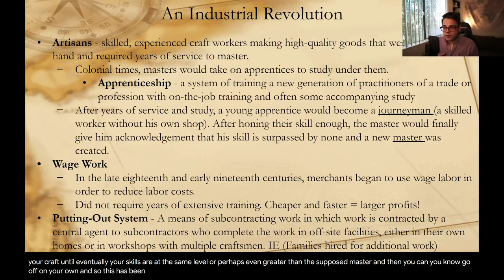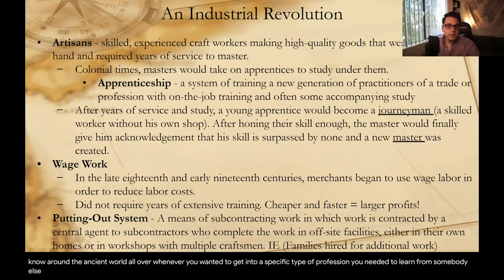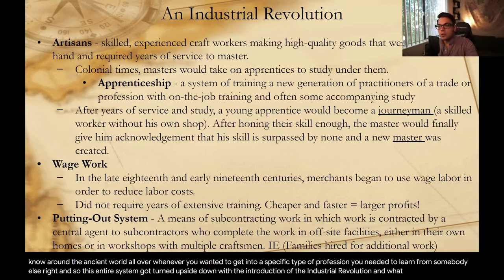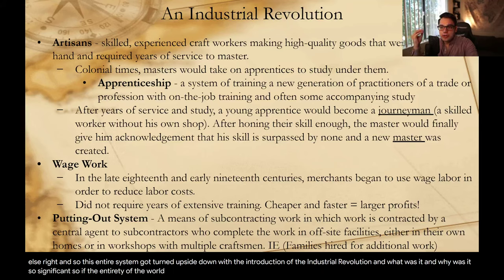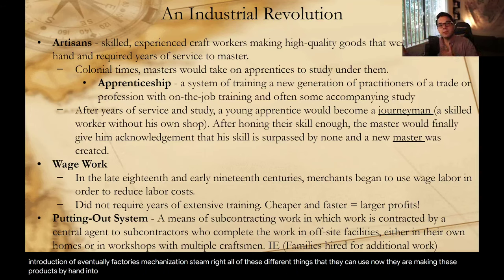This has essentially been the way of the world — not just throughout Britain and Europe, but around the ancient world. Whenever you wanted to get into a specific profession, you needed to learn from somebody else. This entire system got turned upside down with the introduction of the Industrial Revolution. If the entirety of the world is using this one mode of production, with the introduction of factories, mechanization, and steam, they slowly converted making products by hand into making products from machines. Thus, over time, instead of needing to hire 200 individuals to produce something, perhaps you only need to hire 50, because the machines are doing most of the work and everyone else is just overseeing them.